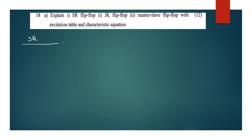Now we have the SR flip-flop. What is the truth table? We have clock, SR, and Qn+1 as our output. Clock is 1. For SR, there are 4 combinations: 0,0 — 0,1 — 1,0 — 1,1.